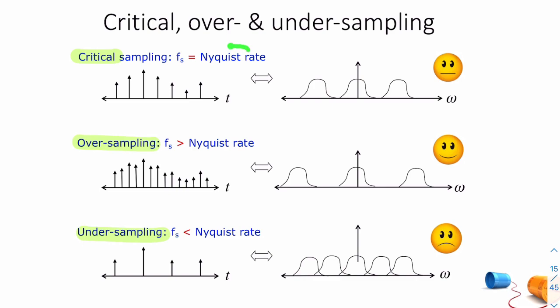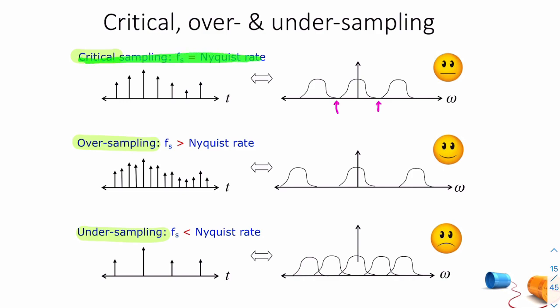Critical sampling is when your sample rate is equal to the Nyquist rate — you're sampling at exactly 2B. Your adjacent spectra don't overlap but there's no guard band; they basically touch. This can be acceptable if you have very low or zero power at frequency B, but generally we try to avoid critical sampling. If you have a frequency component that's non-zero at B hertz, then that's definitely not acceptable.